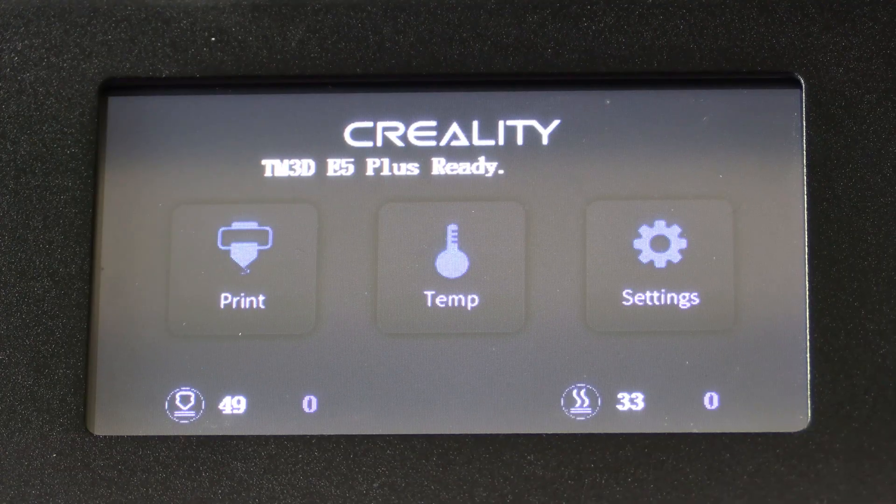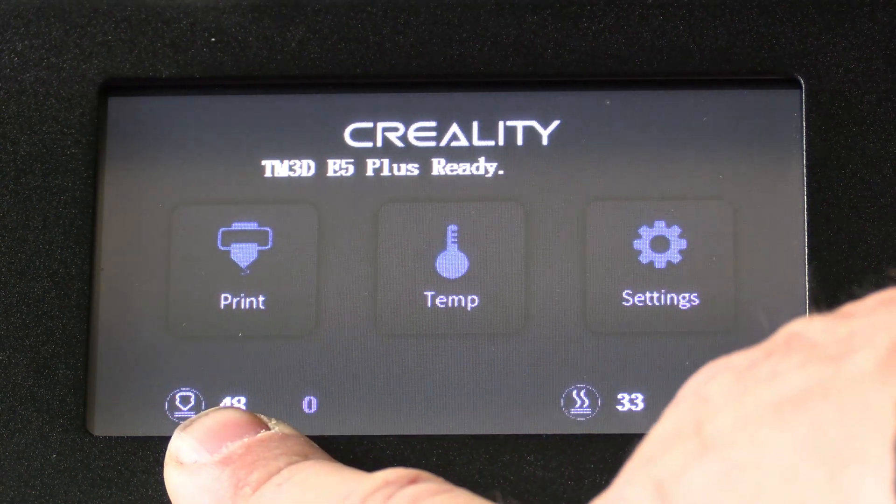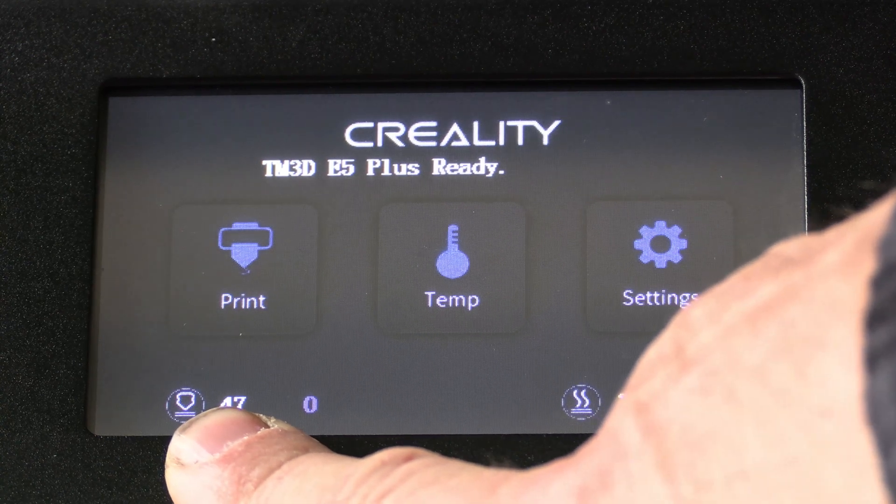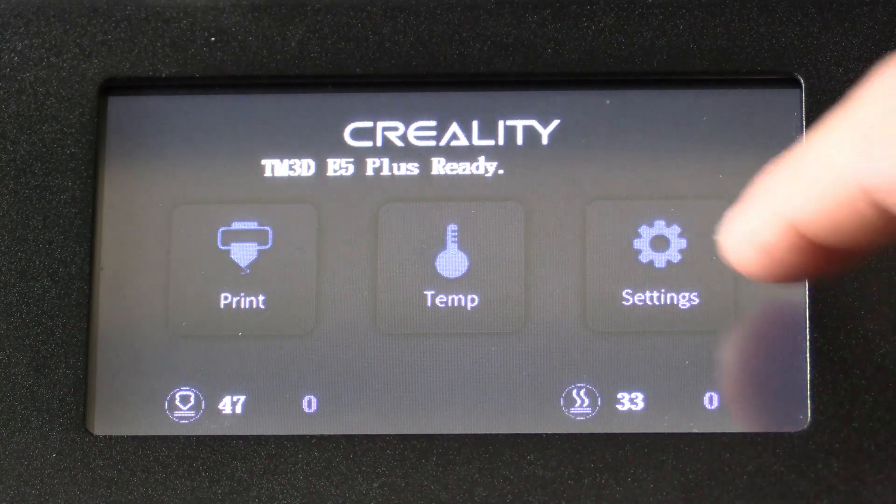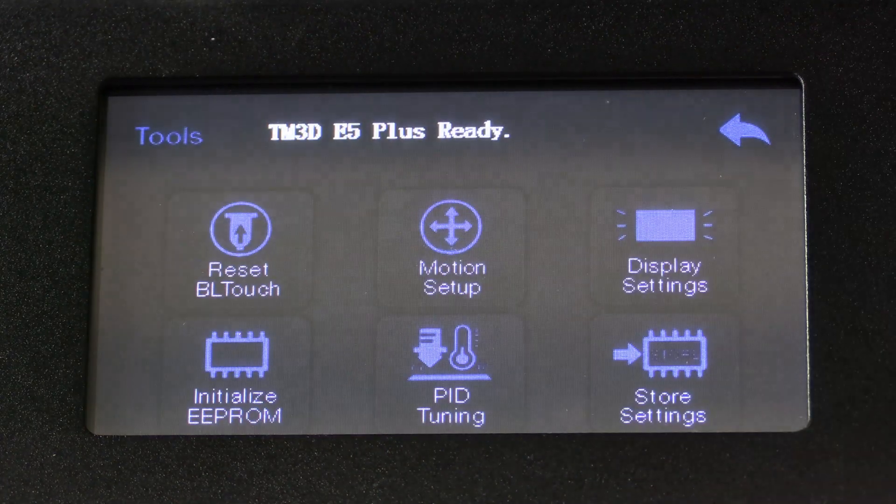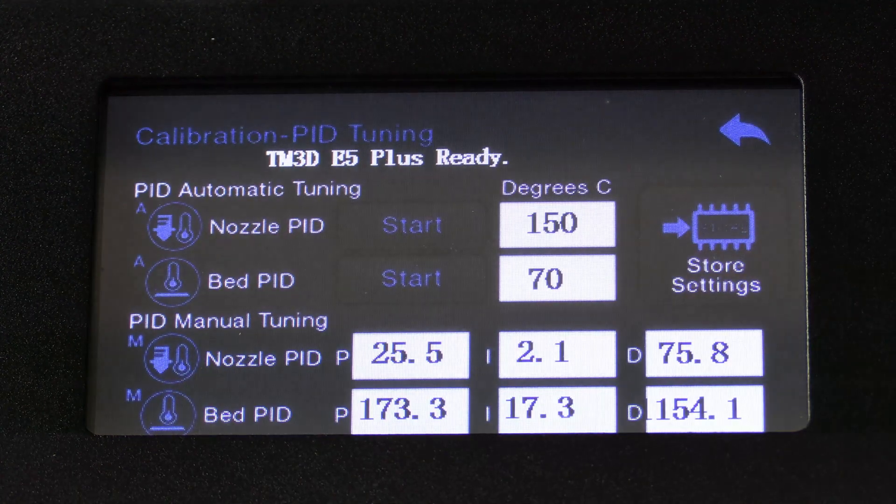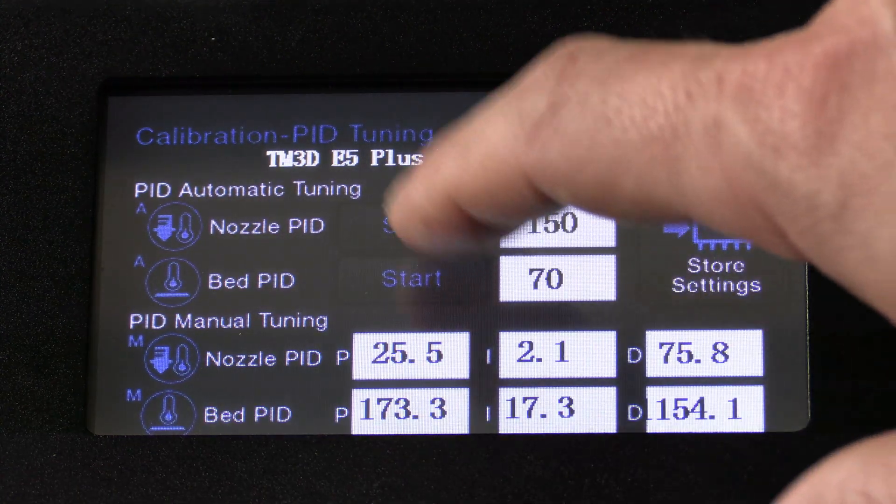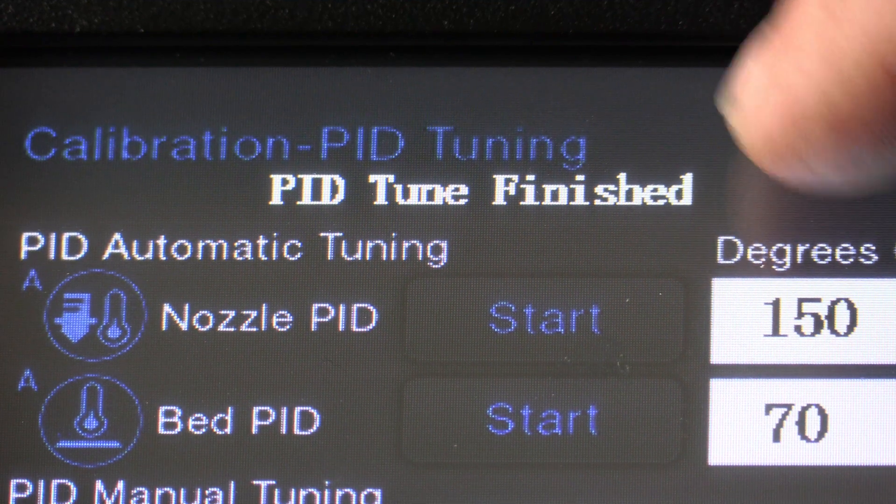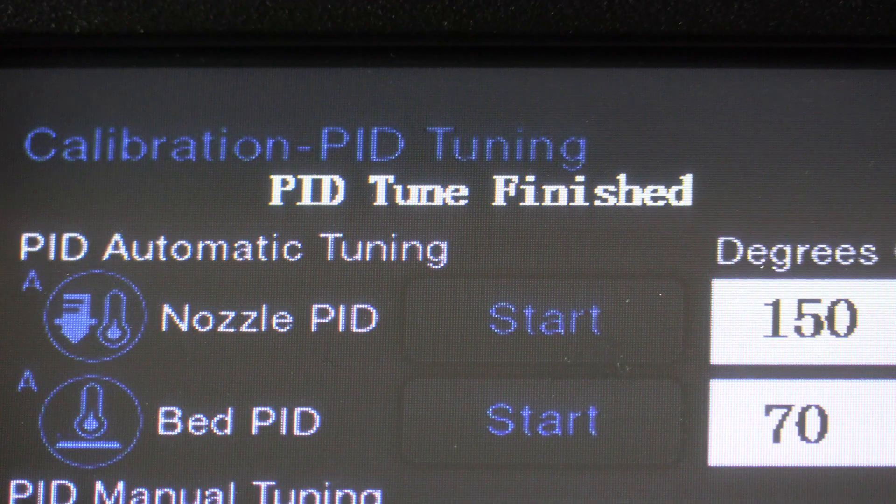All right the machine is on and the thermistor is working because it's reading a temperature. If it reads minus 15 it is not seeing your thermistor and you need to check your wires. The first thing I'm going to do is run a PID tune. Everybody's using different firmware so you go ahead and learn how to do it on your firmware. For mine it's as easy as pressing start. And that's the good words we're looking to see. Finished. That means not only is the heater working but the thermistor is working as well.